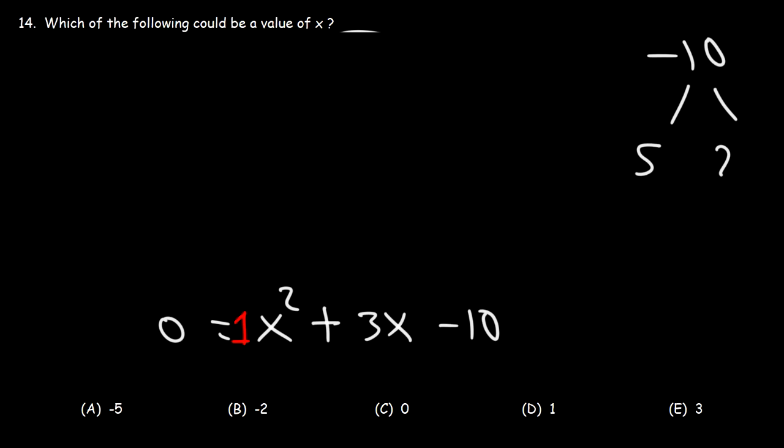So we know 5 and 2 will give us 10 if we multiply the two numbers. Now, should we make the 5 negative or the 2 negative? Negative 2 plus 5 is positive 3. So the 2 has to be negative.